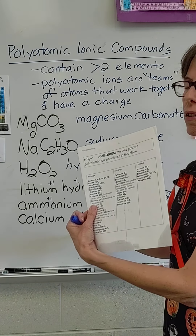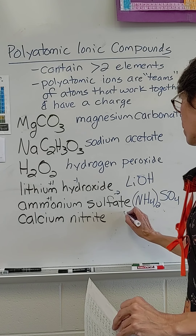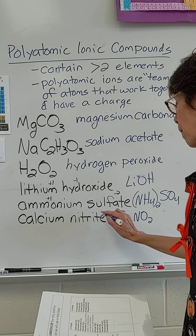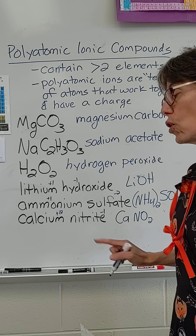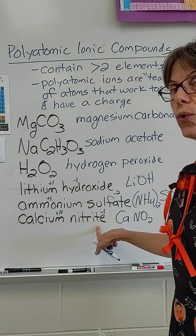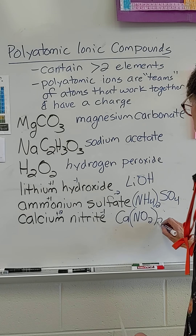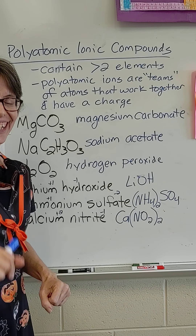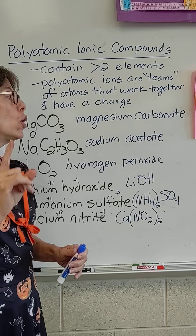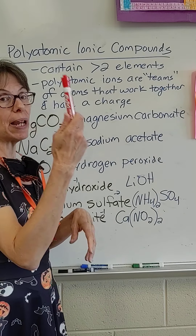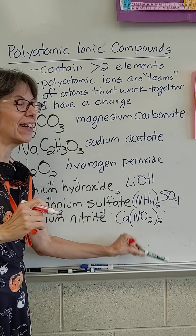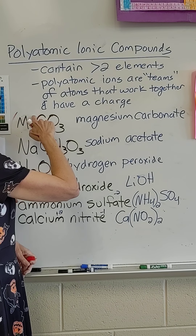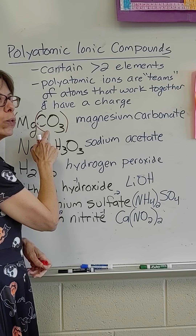Let's look at this first example. Magnesium is easy — straight off the periodic table. Then I see Mg, C, and O, so I know that's a polyatomic. I take out my polyatomic chart — I've listed this in the resources on CTLS and also sent it out on Remind. On that table, everything in the first column has a negative one charge, the next has a negative two charge, a few have negative three, and there's only one with a positive one: ammonium. I look up CO3 and find that it is carbonate. So the name is magnesium carbonate.